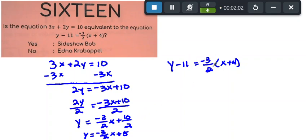So let's go ahead and distribute. Y minus 11 equals negative 3 halves x, and we're going to multiply negative 3 halves times 4. So this turns into y minus 11 equals negative 3 halves x.